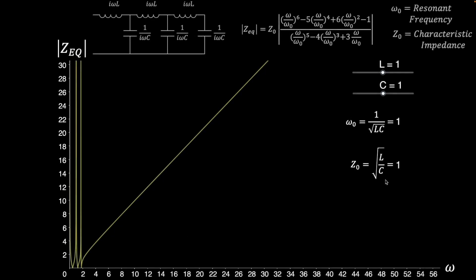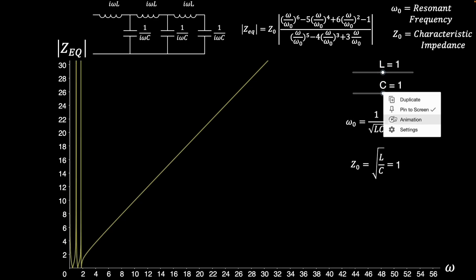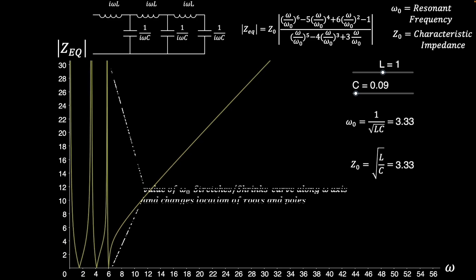On this chart, we're looking at how the absolute value of the total impedance changes based on the system frequency. The best place to start is by setting the inductance, L, and the capacitance, C, both equal to 1. I'll decrease and increase C, which will change the resonant frequency and characteristic impedance. Look for patterns in how the impedance curve behaves as the resonant frequency and characteristic impedance change.